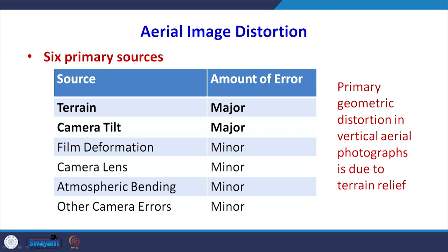Aerial images have lots of distortion when we take from the aerial camera. It could be due to terrain, which we are discussing today; it could be due to tilt if the camera axis is not vertical; it could be film deformation; camera lens properties; the atmosphere present between the object and the camera; and other camera errors. Suppose we take care of tilt while taking photographs — then terrain is the major source of distortion present in the photograph. The primary cause of geometric distortion in the photograph is the relief of the terrain.